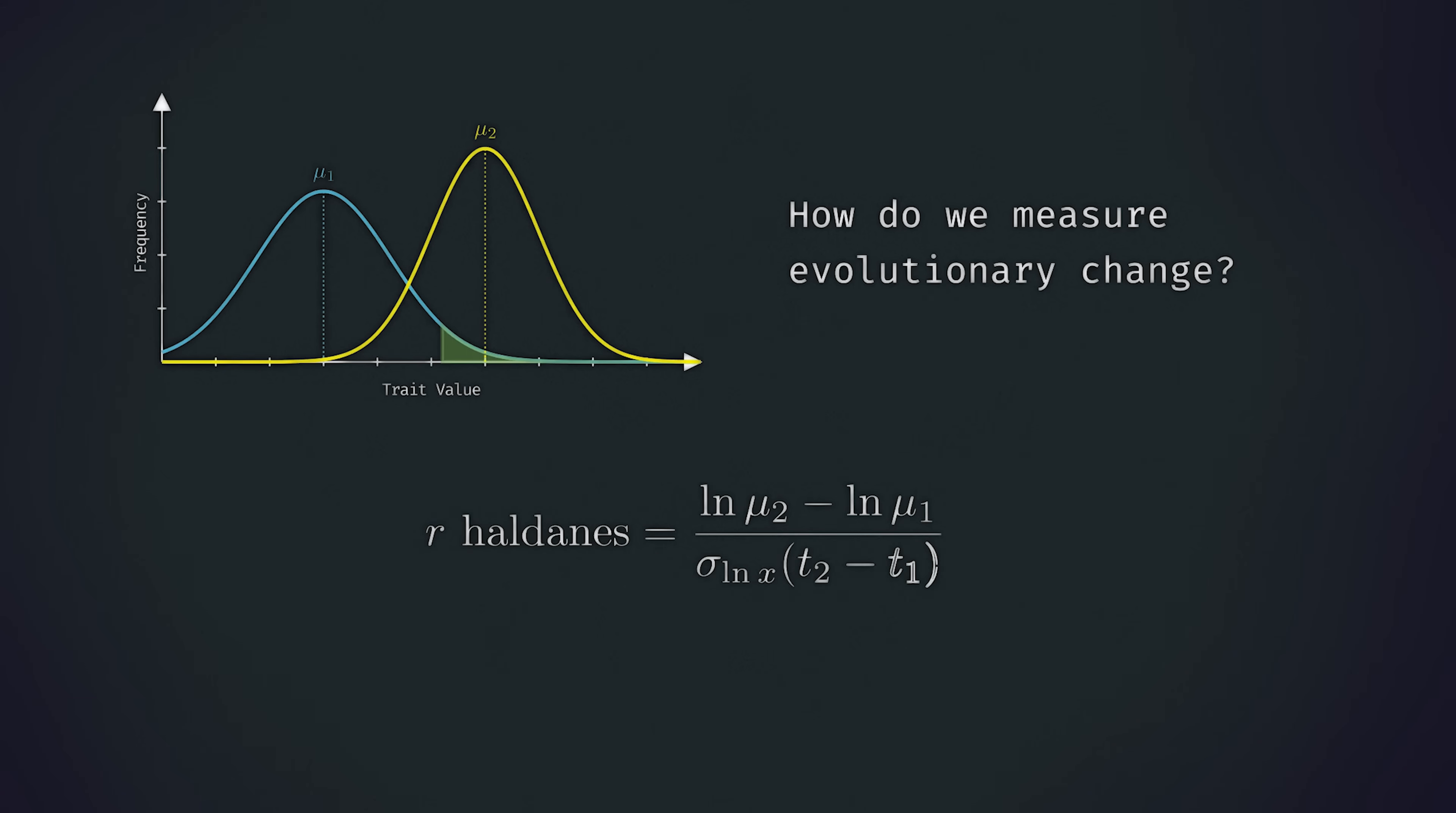On the screen now, we have the equation for computing Haldanes. Firstly, I want to draw your attention to this term in the denominator. This is the number of generations between measures, which in our case is just going to be one, so we can remove it. Next, we have this somewhat unusual notation for the other term in the denominator.